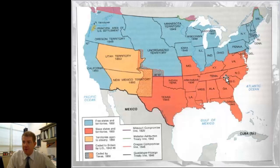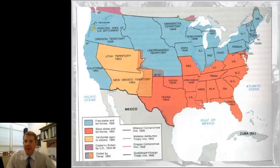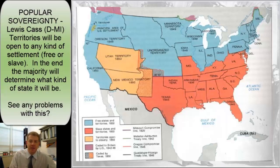The Southern slave states are in red, and the Northern free states are in blue. Any territory already determined to have no slavery is also in blue — including this big unorganized territory, the Minnesota territory, and the Oregon territory. All of that is going to be free from slavery. Then we have this tan color, which represents territories open to slavery in 1850.